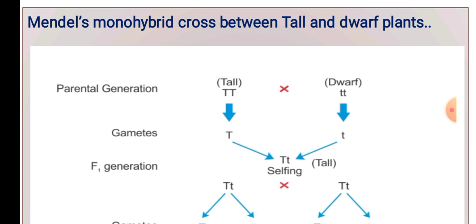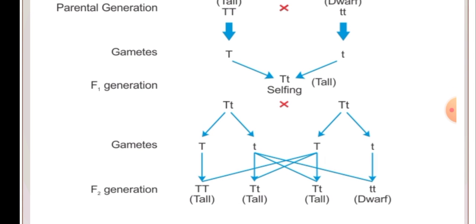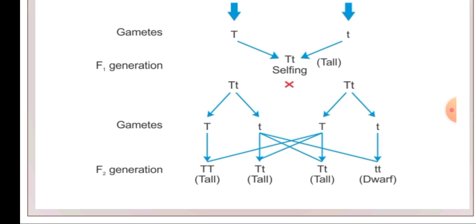He manually crossed tall and dwarf plants. In the F1 generation, you get all tall plants with heterozygous genotypes. Then when F1 generation plants are self-pollinated — remember, here comes self-pollination — in the F2 generation you get three tall plants and only one dwarf plant.